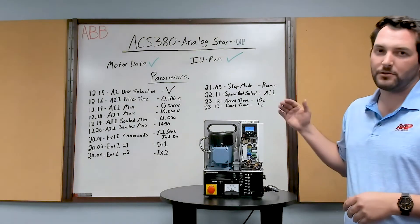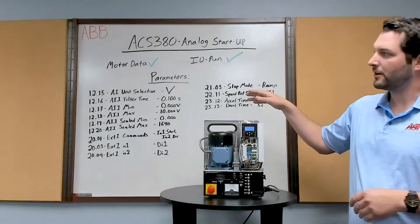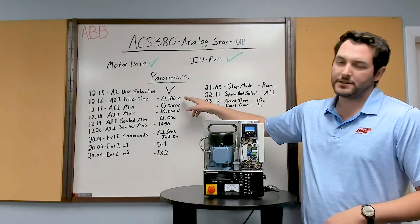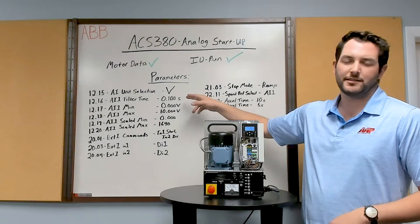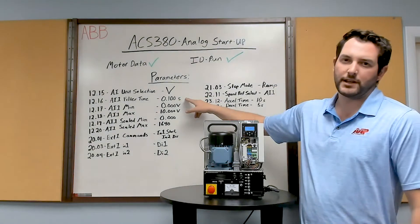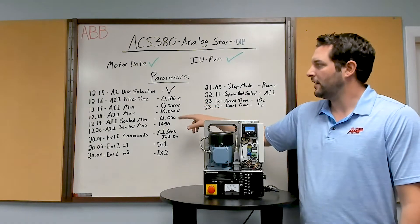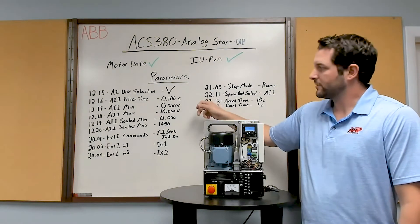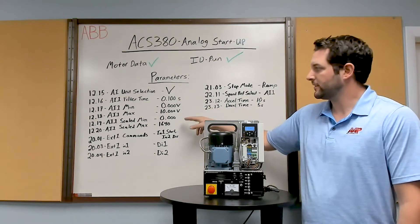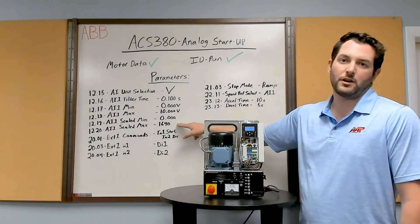To do that, we're going to go through about 15 parameters and we're going to start over in group 12 with our analog input selection — so it's volts and the filter time. The filter time is a time constant used to smooth out the signal and control the speed. It's defaulted to 0.1 seconds and we're going to keep it there; it's very rare that we ever change this. Our analog minimum is 0 volts, our maximum is going to be 10 volts, and we want to scale that to the speed of our motor — so 0 volts gives 0 RPM and 10 volts will give us 1640 RPM.